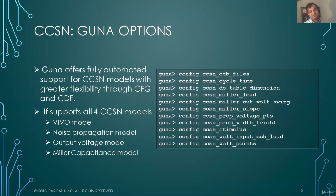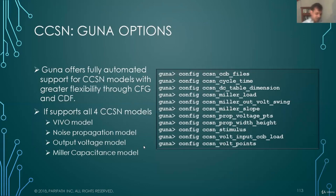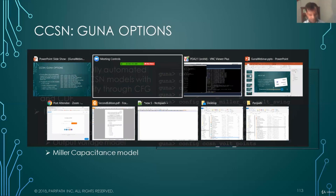And these are some of the GUNA options to let you control the CCS noise model. And again, it supports all four CCS noise models. VIVO model, noise propagation model, output voltage model, and Miller capacitance model. So with that, let's go to our lab and see what we get for our noise.